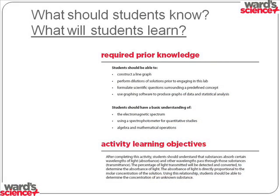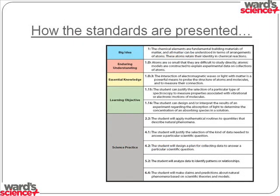First it gives you a general abstract of what this lab is all about, then it goes into the required prior knowledge and what students will learn doing this lab. Then it tells you the activity learning objectives and a little bit about AP chemistry in general, as well as how to record data correctly in a laboratory notebook, what materials you will need, and what are provided in this particular kit. This next page is the holy grail of what you're going to need to show to your administrators about what standards you're aligning to.